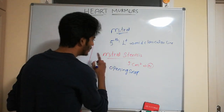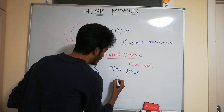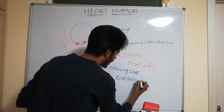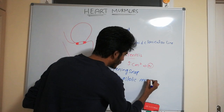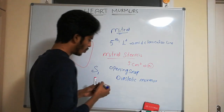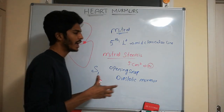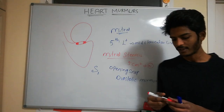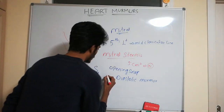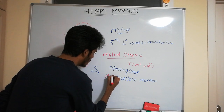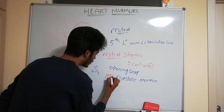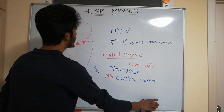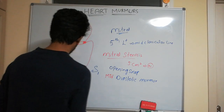The murmur in mitral stenosis is heard during diastole — it is a diastolic murmur. More specifically, it is heard in the mid-diastole, so in mitral stenosis the murmur is classified as a mid-diastolic murmur.